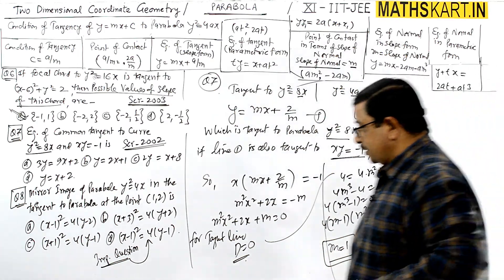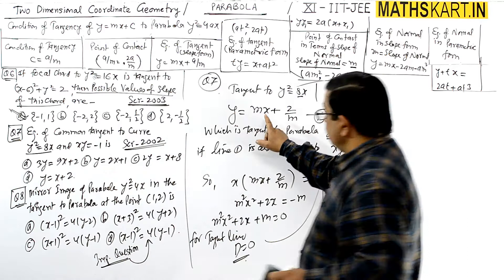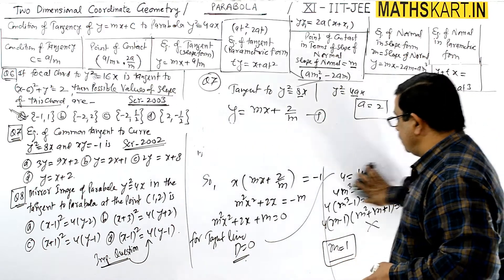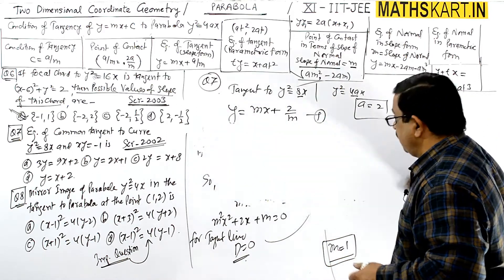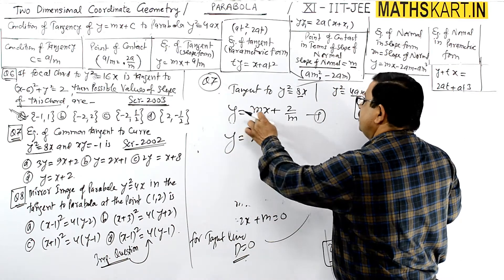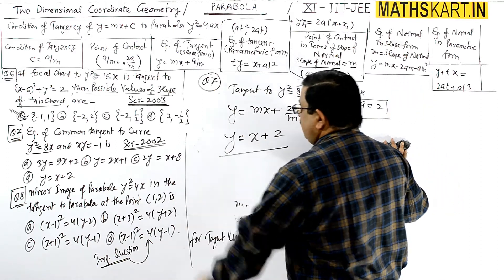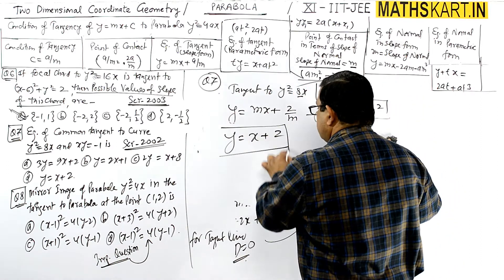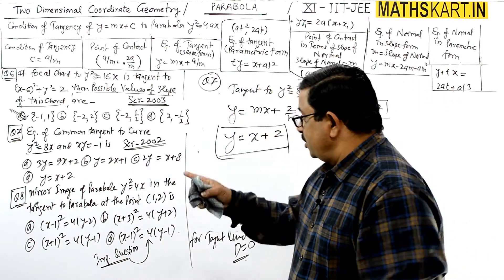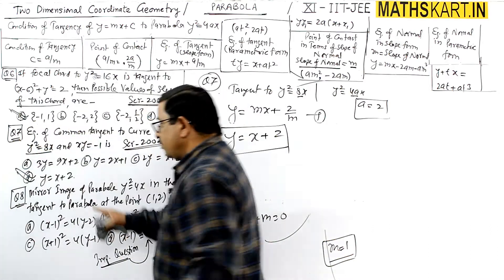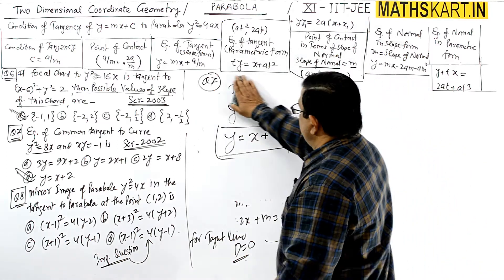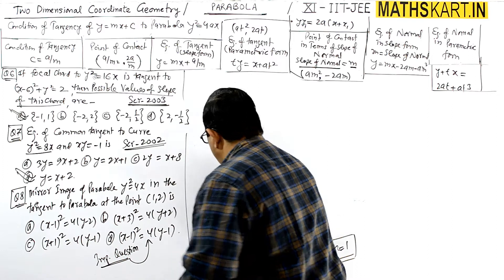Now we can write the required tangent. Substituting m = 1 into y = mx + 2/m gives y = x + 2. So the required tangent is y = x + 2. This is a straightforward application of the discriminant condition. Option D is correct.